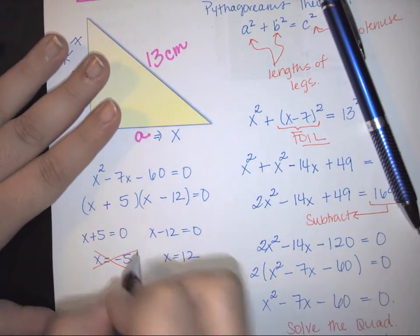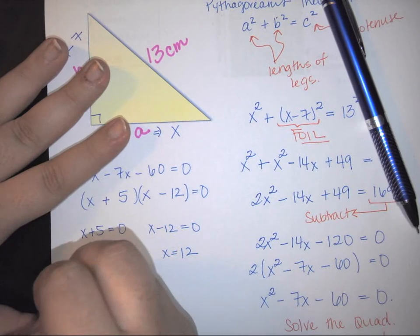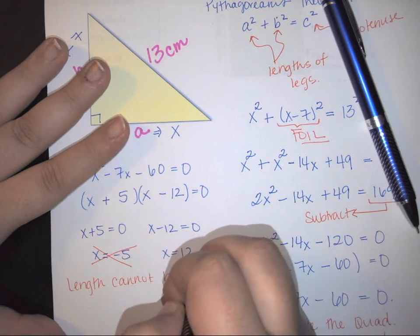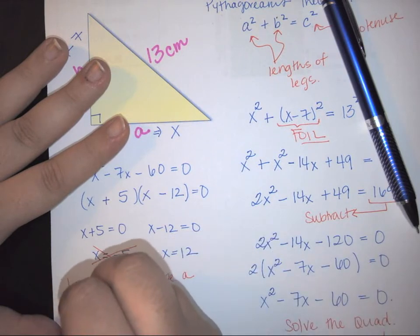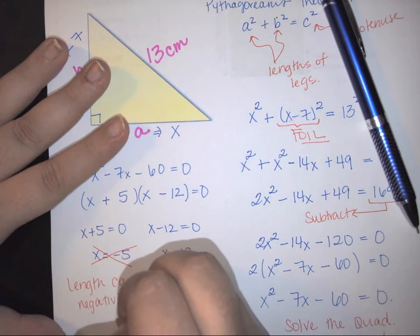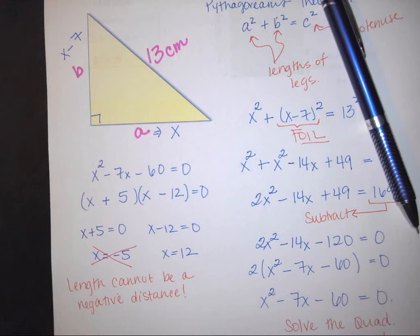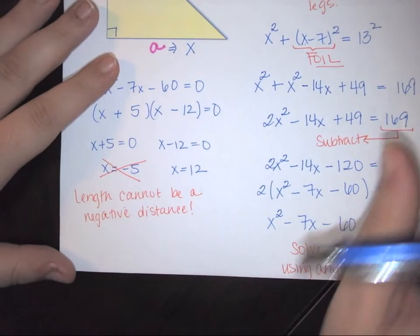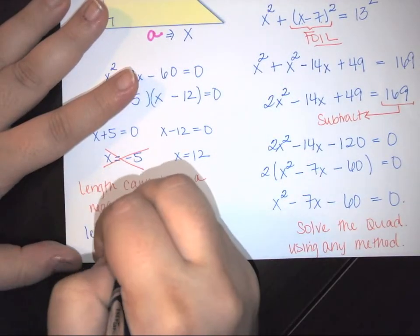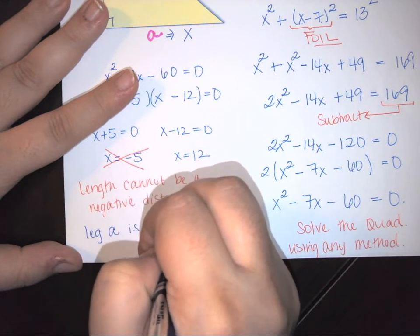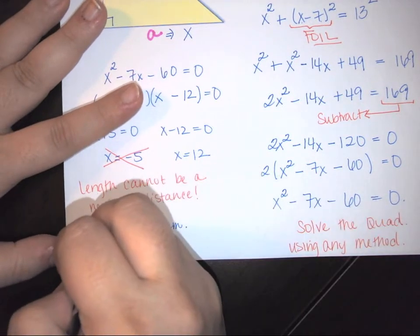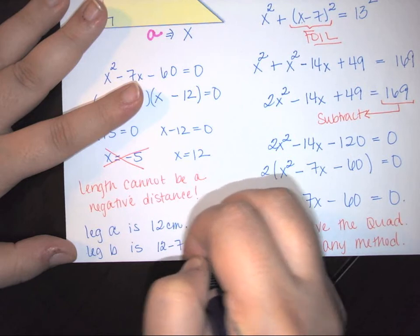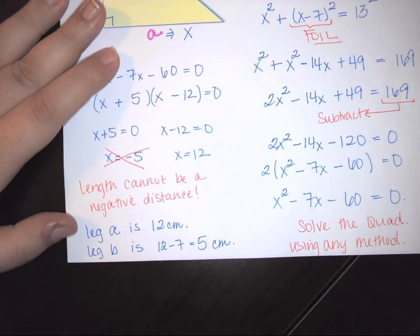We have to eliminate the negative. And the reason for that is because your length cannot be a negative distance. Therefore, we know our first leg is going to be 12. So we know that leg A is 12 centimeters. And then from that, we also know that leg B is 12 minus 7, which equals 5 centimeters. And thus, we have answered our problem.